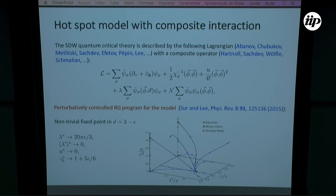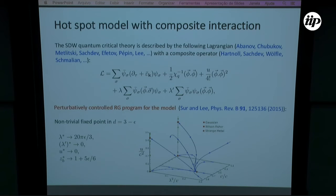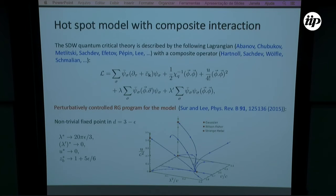We perform a perturbative calculation using the RG program put forward by Sur and Lee. They found a non-trivial fixed point different from the Gaussian and Wilson-Fisher fixed points, fully controlled in spatial dimensions D equals 3 minus epsilon. In the limit of small epsilon this is fully controlled, justifying our calculation.